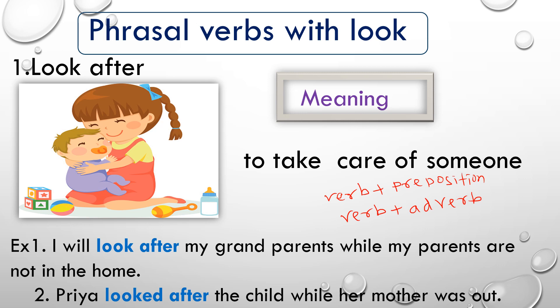The meaning of a phrasal verb is something different from its individual words. For example, 'look' is a verb and 'after' is a preposition. Whenever we join these two words, they give a different meaning. So today I am bringing to your knowledge how the verb 'look' gives different meanings when we add prepositions to it.